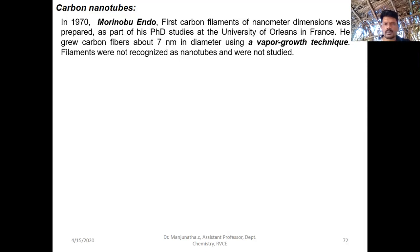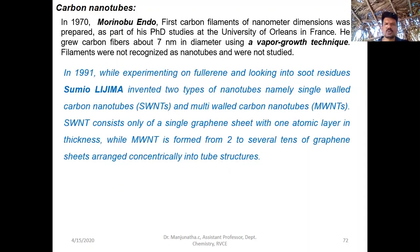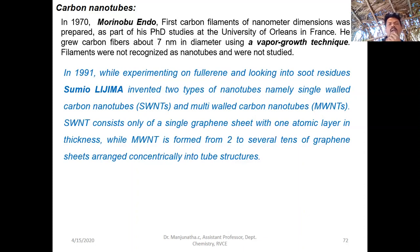But he did not study it in detail. Later, in 1991, Sumio Iijima found two types of nanomaterials — single-walled carbon nanotubes and multi-walled carbon nanotubes. Single-walled carbon nanotubes are made up of one sheet of graphene rolled up into the form of a cylindrical tube, and multi-walled carbon nanotubes are made up of two to three or more graphene sheets rolled up in the form of cylindrical tubes. He studied their properties.